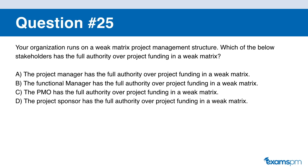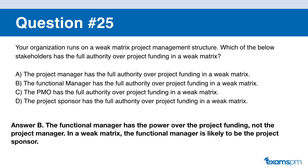Question number twenty-five. Your organization runs on a weak matrix project management structure. Which stakeholder has full authority over project funding in a weak matrix? A: the project manager. B: the functional manager. C: the PMO. D: the project sponsor. If you said B, you are correct. The functional manager has the power over project funding in a weak matrix, not the project manager. In a weak matrix, the functional manager is likely to also be the project sponsor.